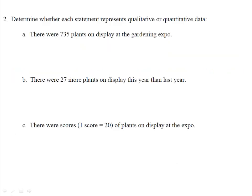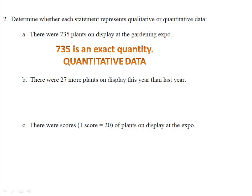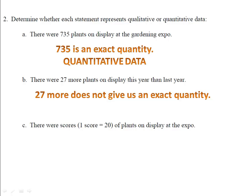Here we have a couple of examples. There were 735 plants on display at the Gardening Expo. Notice that 735 is an exact quantity — therefore it is quantitative data. There were 27 more plants on display this year than last year. 27 more might be a number, but it does not give us an exact quantity. It simply describes the number of plants compared to last year. Therefore, this is an example of qualitative data.